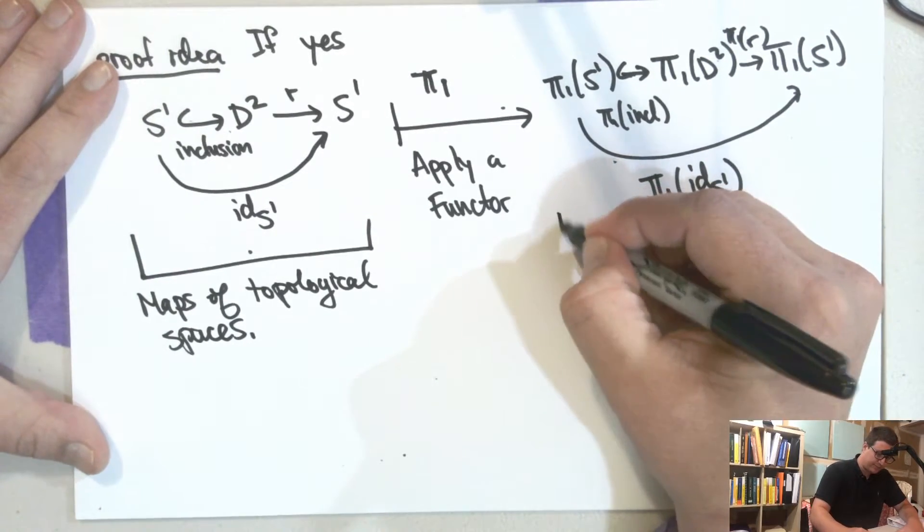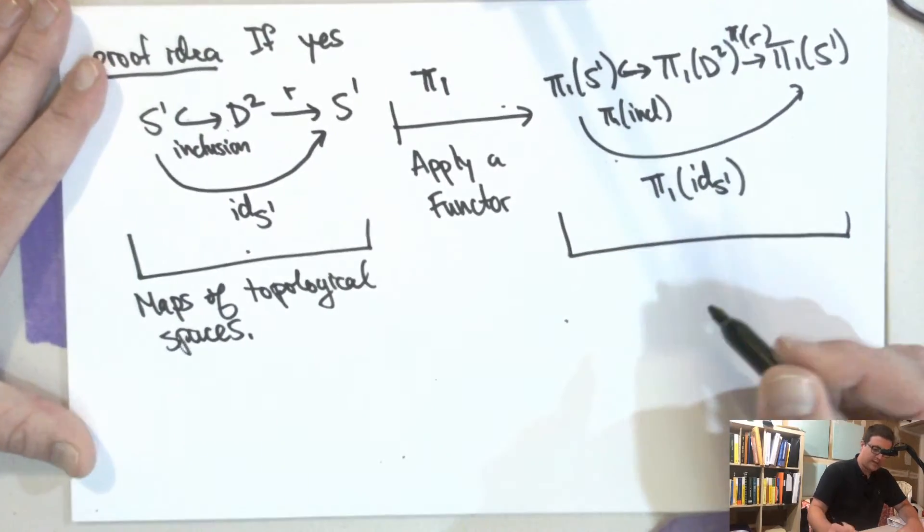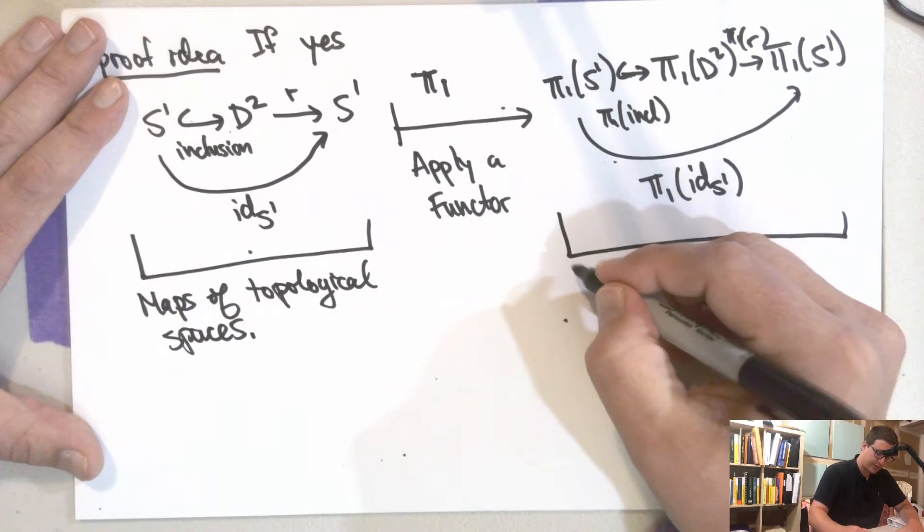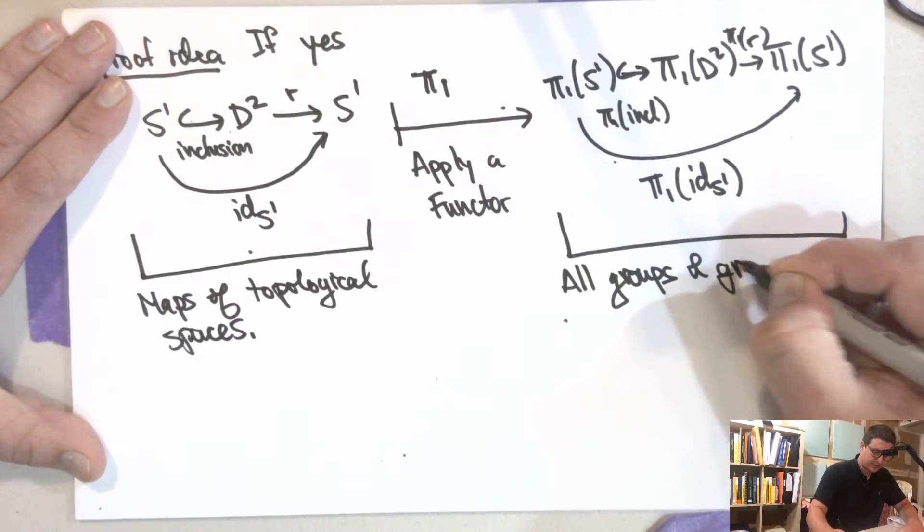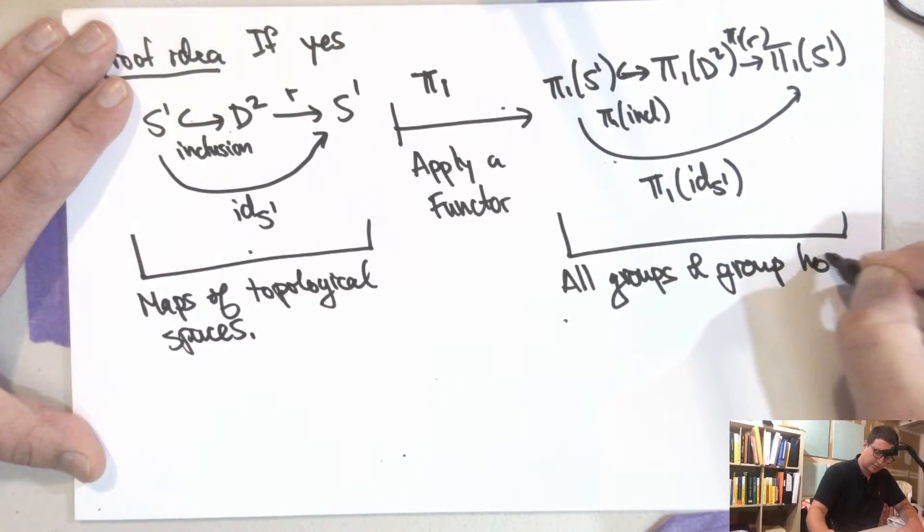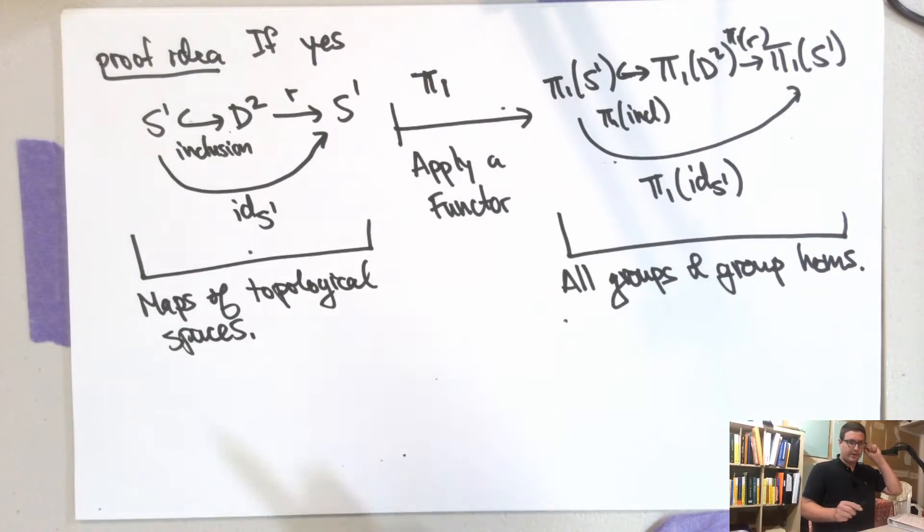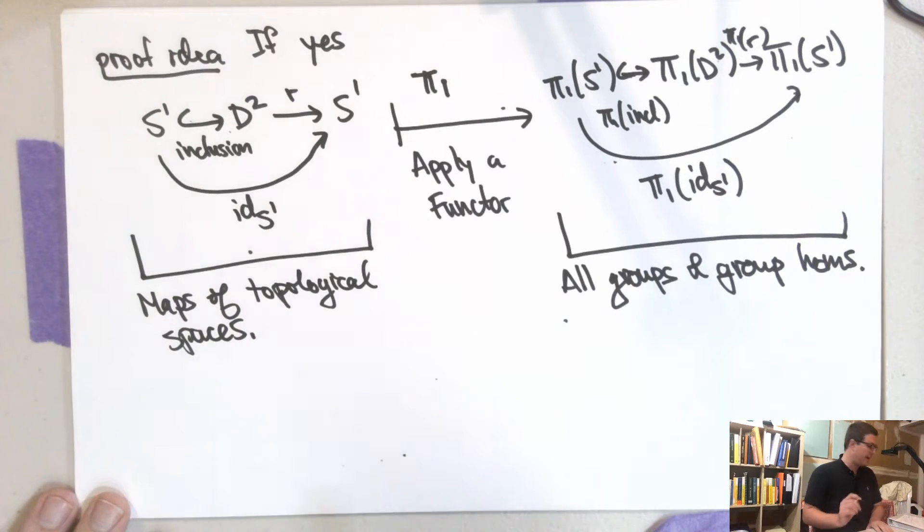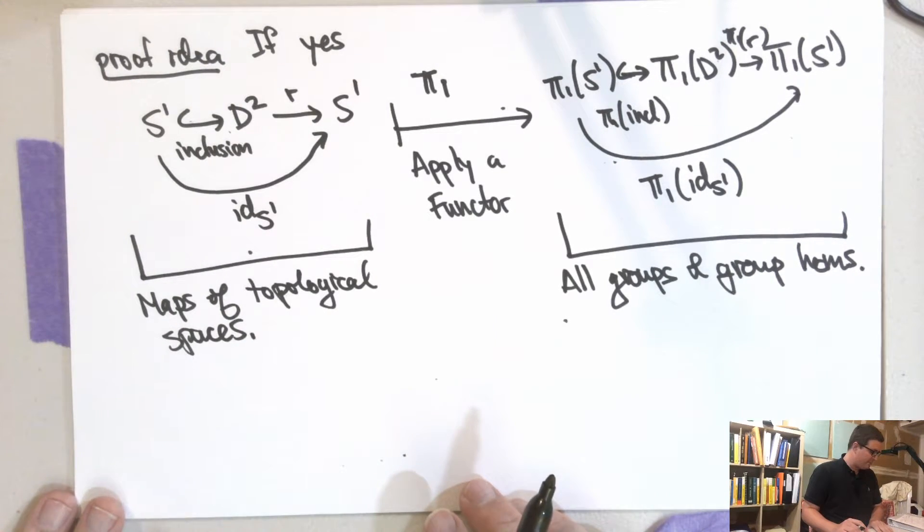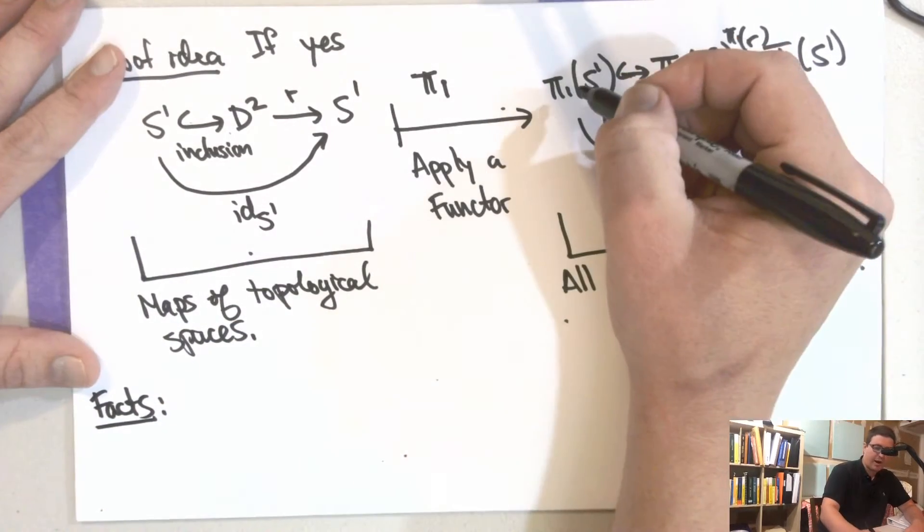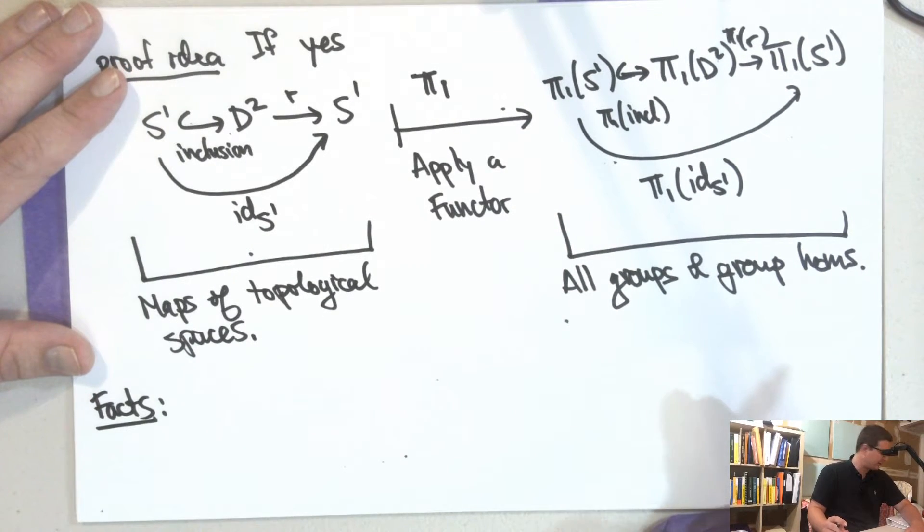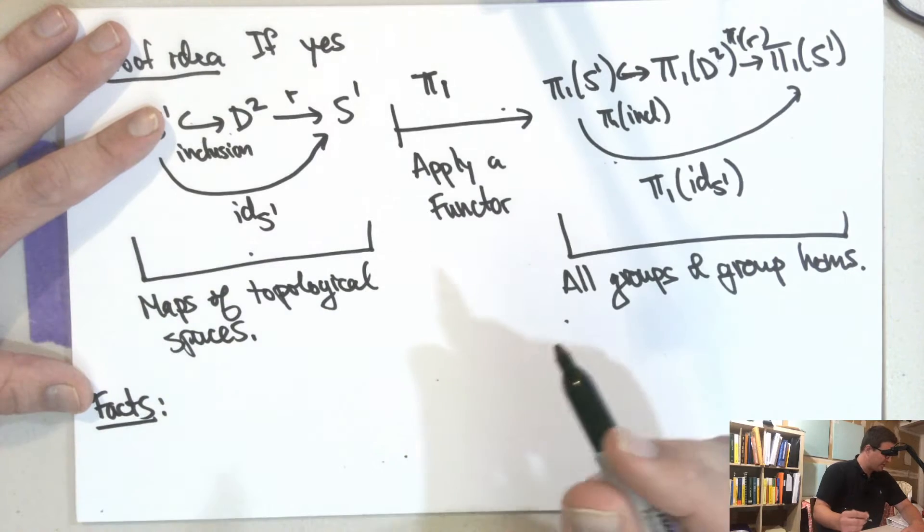But what happens is that this thing here, these are all group homomorphisms. So these are all groups and group homomorphisms. And these are topological spaces and continuous maps. And then there's some facts about this thing, this particular functor that we'll want to use. So some facts that we use. So this functor here, π₁, is what's going to be the fundamental group.